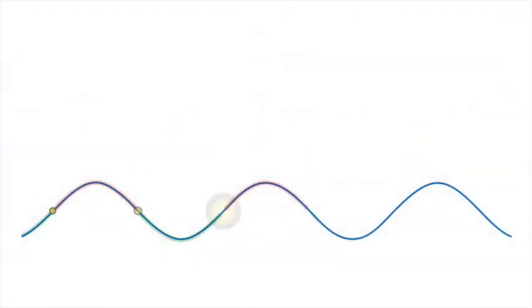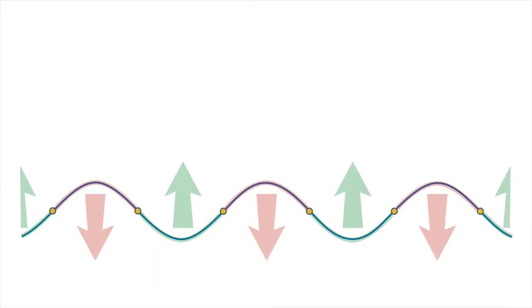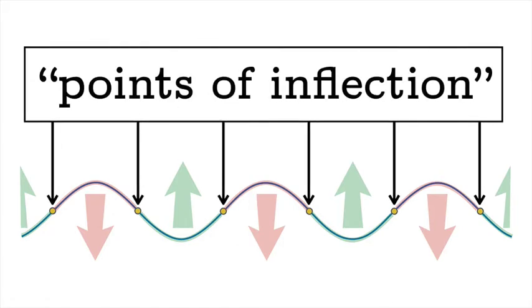Here's a nice sinusoidal curve where we can see the concavity changing back and forth between being concave down and concave up, and these nice points of transition where the concavity changes we call points of inflection.